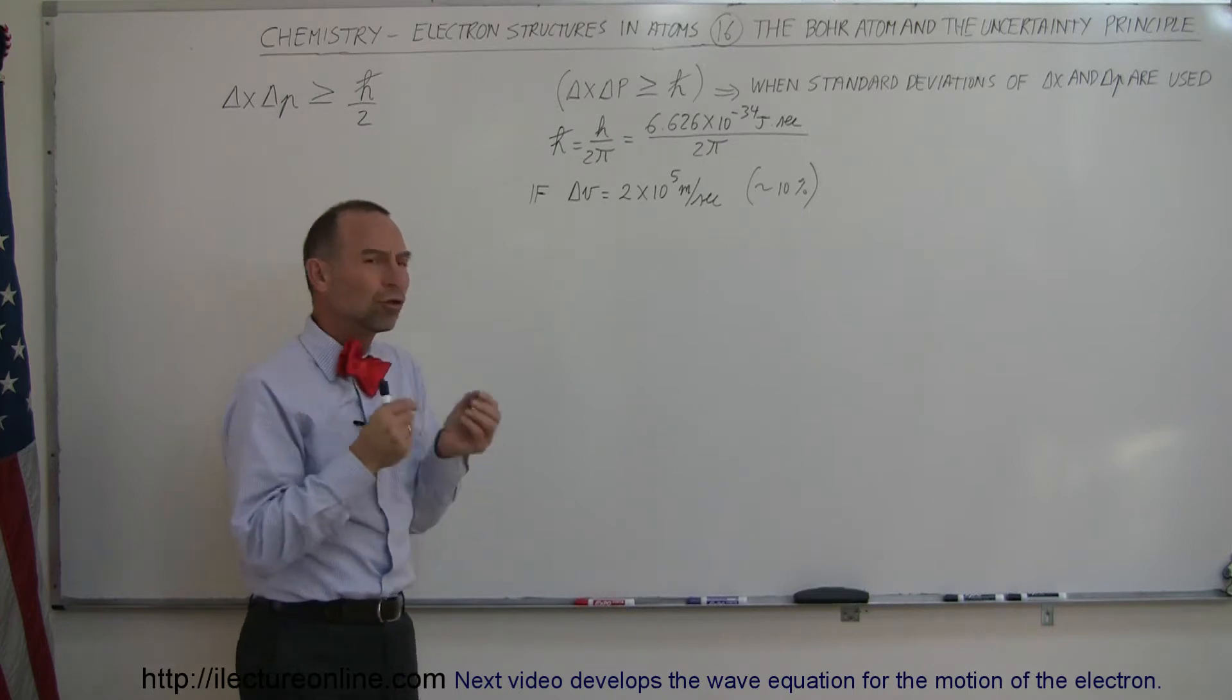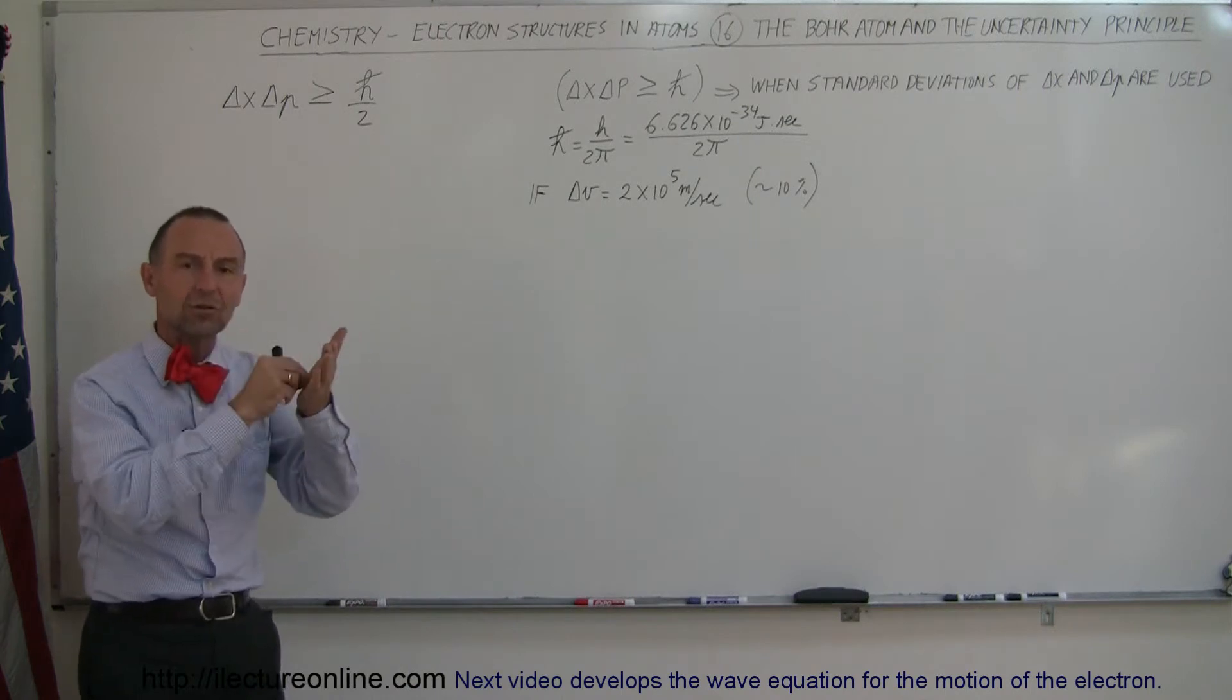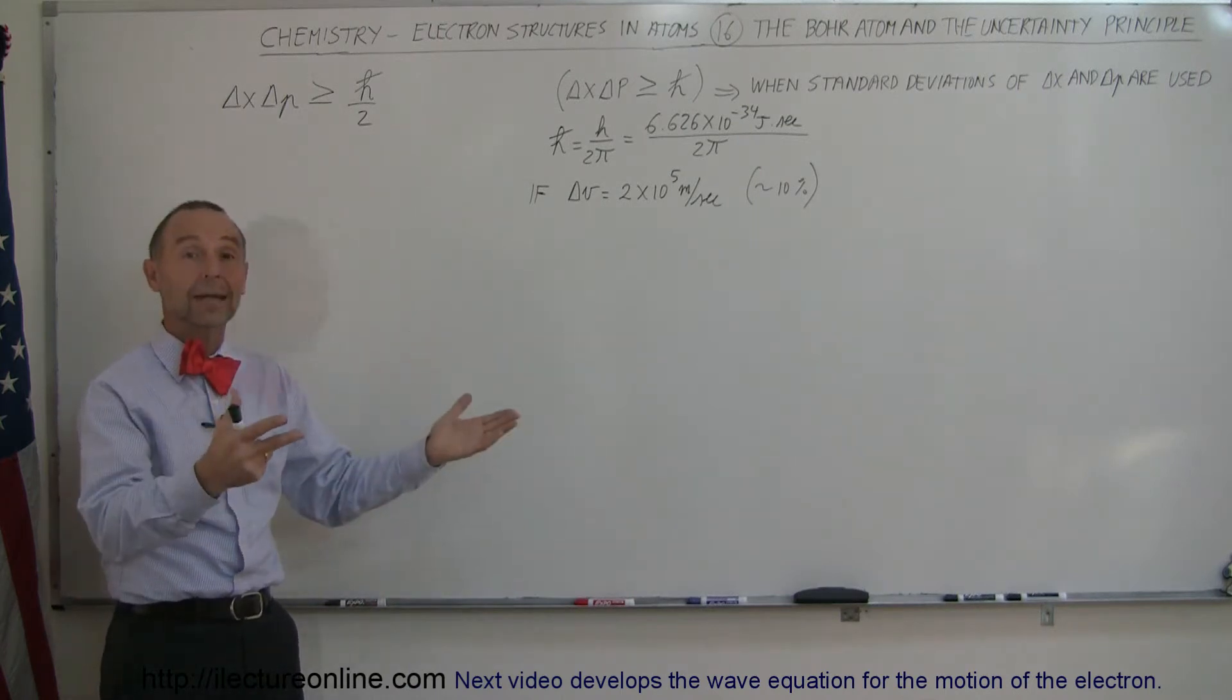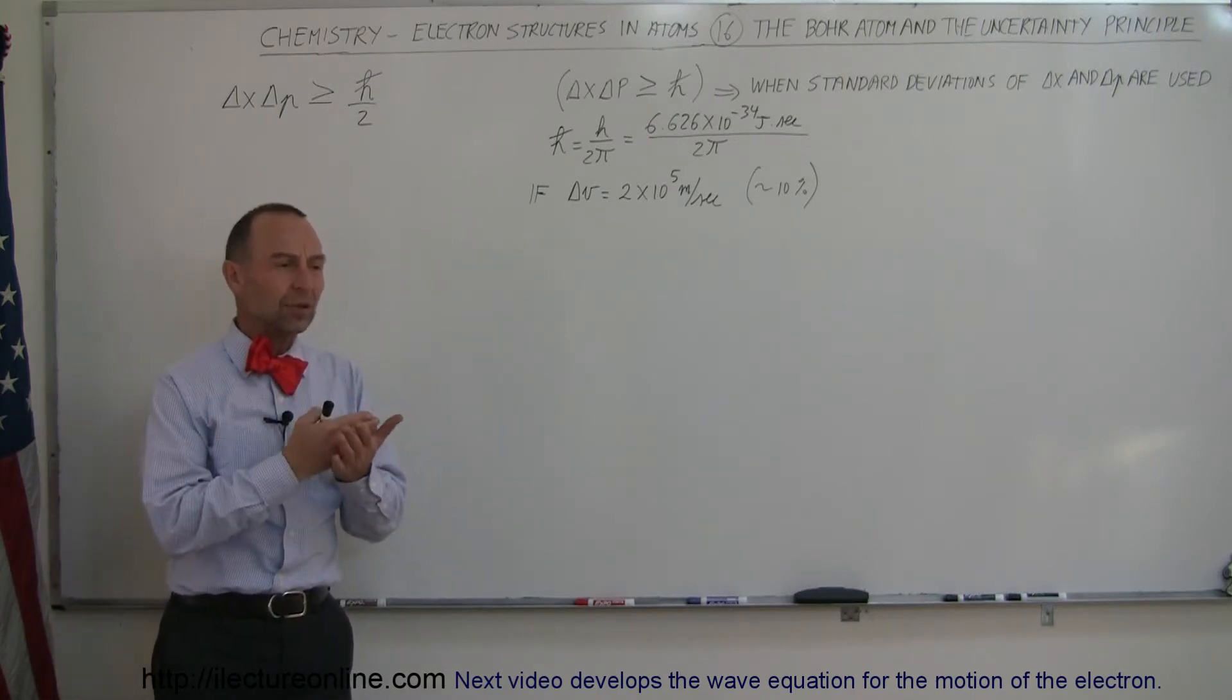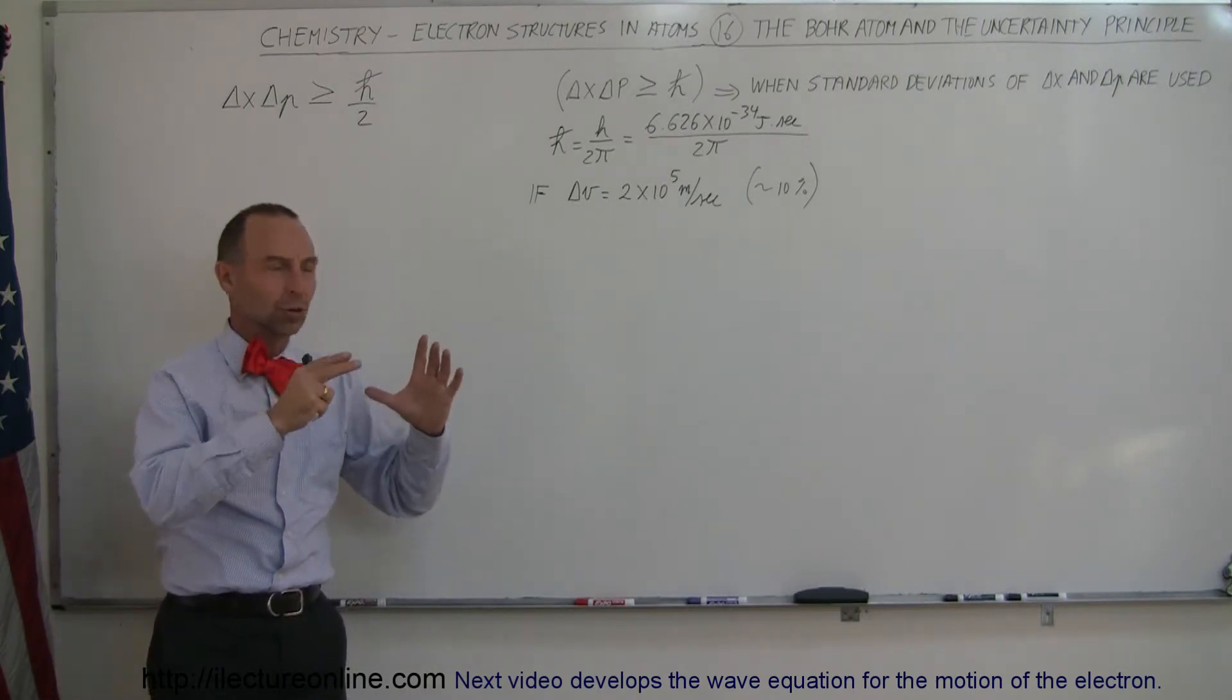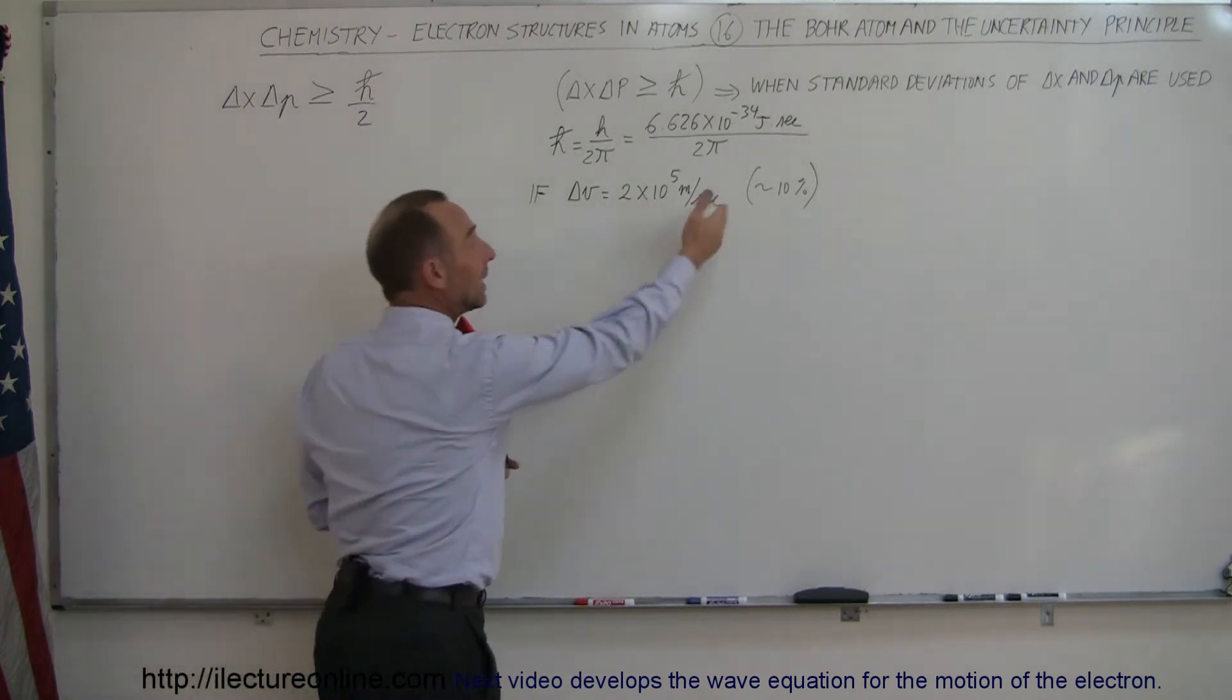So let's assume that we only knew the velocity of the electron in a Bohr atom, in a hydrogen atom, to about the nearest 10% of its true value. Then what would be the uncertainty in the position of the electron? And so what we're doing here is trying to figure out how well we can place an electron in an orbit around an atom.